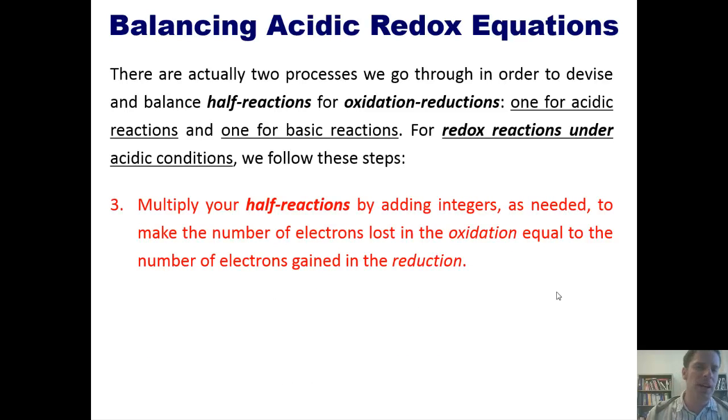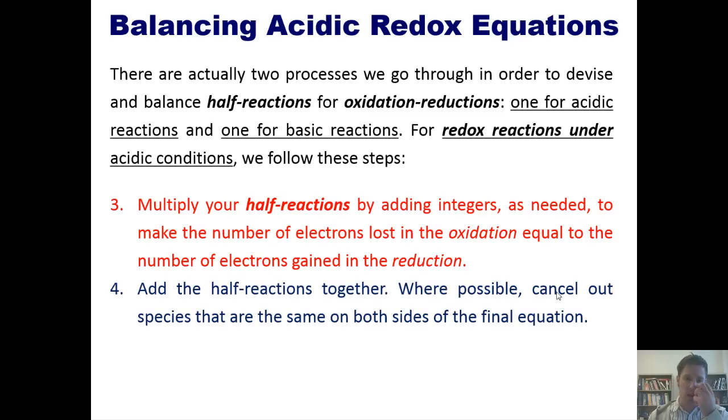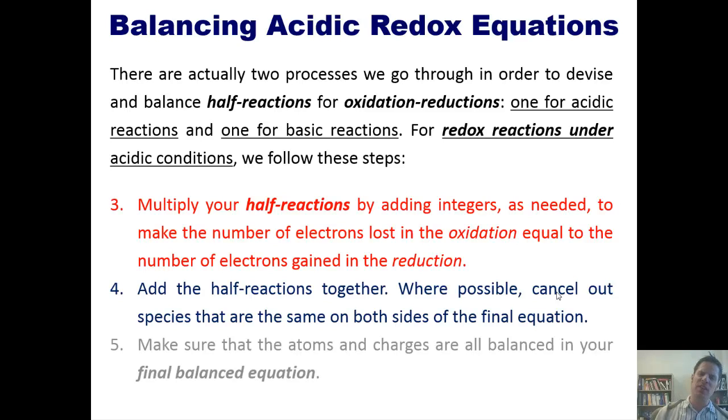Third, multiply your half-reactions by adding integers as needed to make the number of electrons lost in the oxidation equal to the number of electrons gained in the reduction. Fourth, add the half-reactions together. Where possible, cancel out species that are the same on both sides of the final equation. And fifth, finish off by making sure that the atoms and charges are all balanced in your final balanced equation.